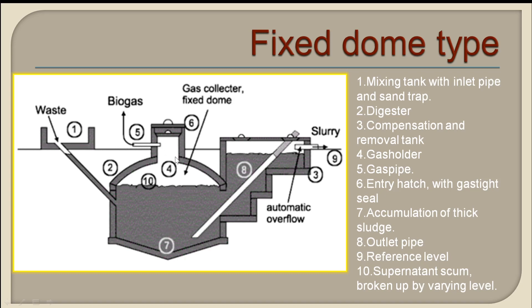The gas pipe allows you to take the biogas out for heating, cooking, or other applications. There is also an entry hatch through which you can enter the digester for cleaning or maintenance. The sludge accumulates at the bottom and can be taken out through the outlet pipe. The reference level is the ground level — the entire digester is placed below it.